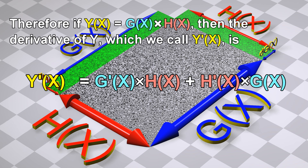Therefore, if y equals g multiplied by h, then the derivative of y, which we call y prime, is equal to g prime multiplied by h, plus h prime multiplied by g.